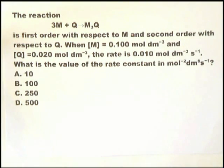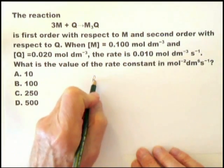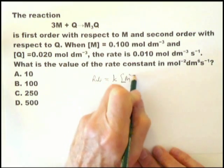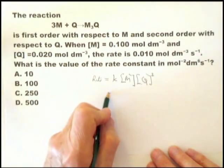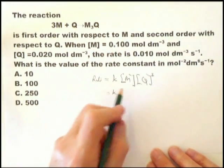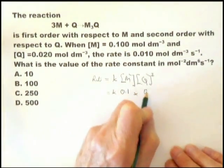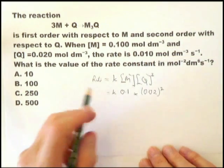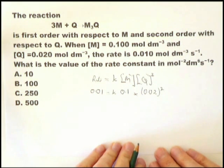Some people can do this in their heads. Some may have to write it down. So the reaction is first order with respect to M and second order with respect to Q. So let's write it down. The rate equals K times M and Q squared. So we put M equals 0.1 and Q equals 0.02 squared. And they tell you the rate equals 0.01.